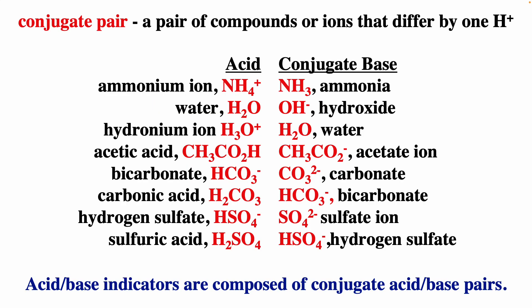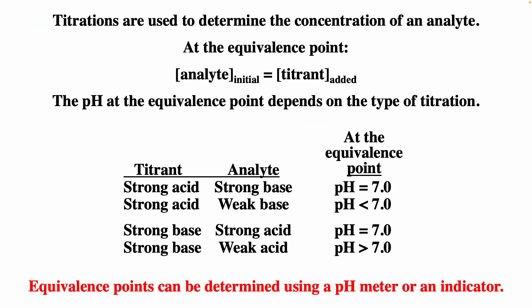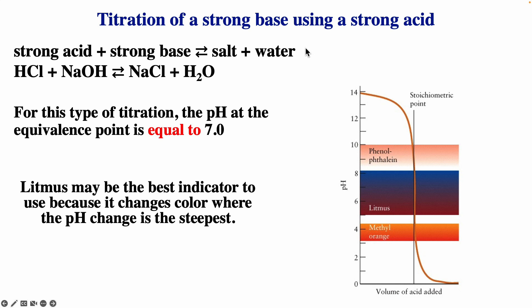All buffers are composed of weak acid plus conjugate base. All acid-base indicators are composed of weak acids plus conjugate bases that are different colors. Titrations determine the concentration of an analyte. At the equivalence point, moles of analyte equal moles of titrant added. The pH at the equivalence point depends on the type: strong acid/strong base → pH 7; strong acid/weak base → pH < 7; strong base/weak acid → pH > 7. The endpoint is determined using an acid-base indicator or a pH meter, at the inflection point of the titration curve.